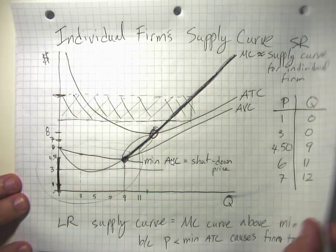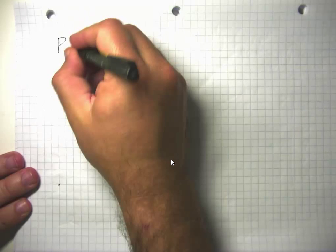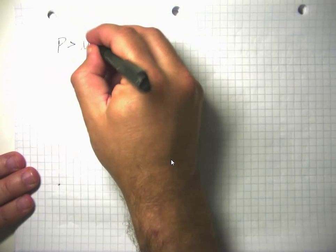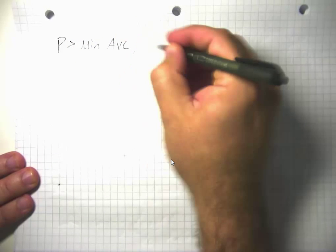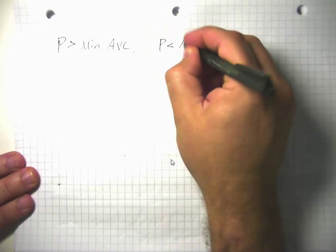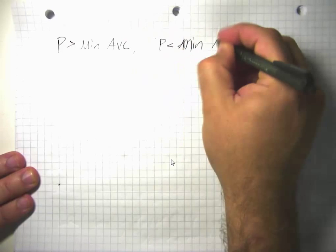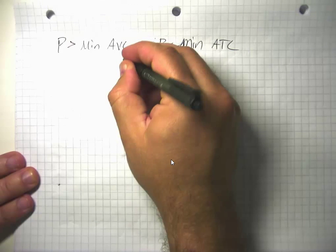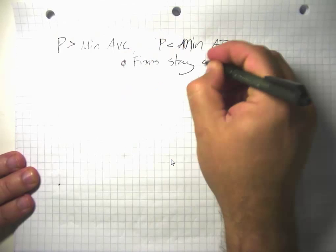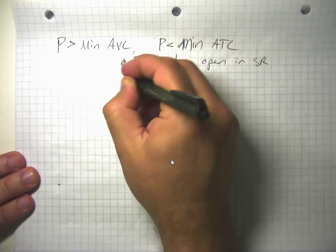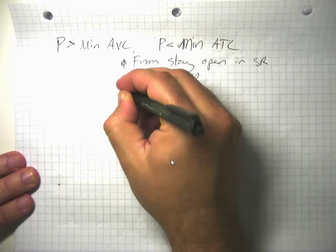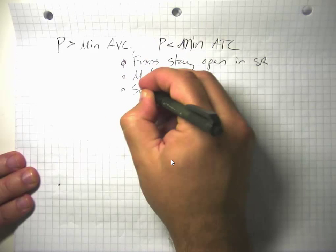Just in summary, if price is greater than the minimum of AVC but price is less than the minimum of average total cost, firms stay open in the short-run and they make losses, and some will exit the industry.